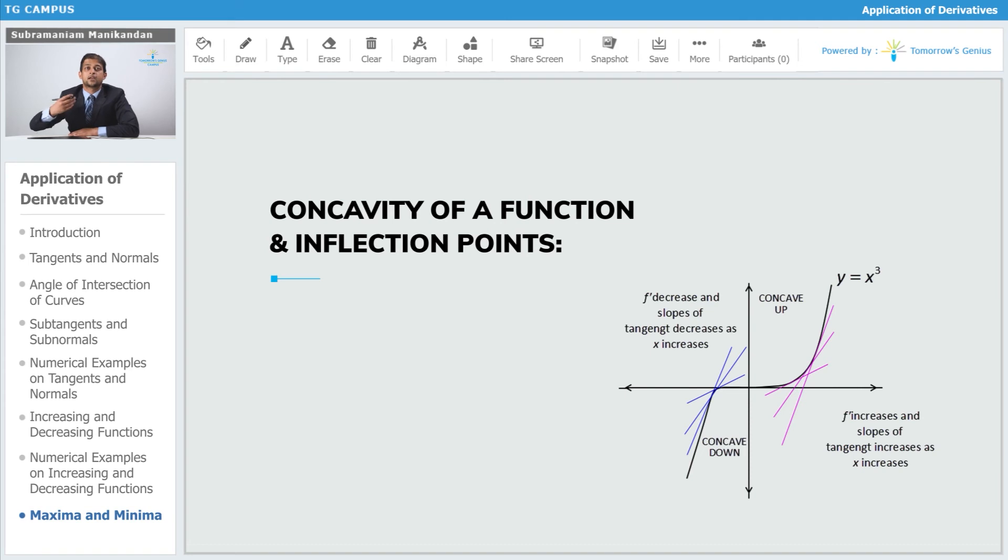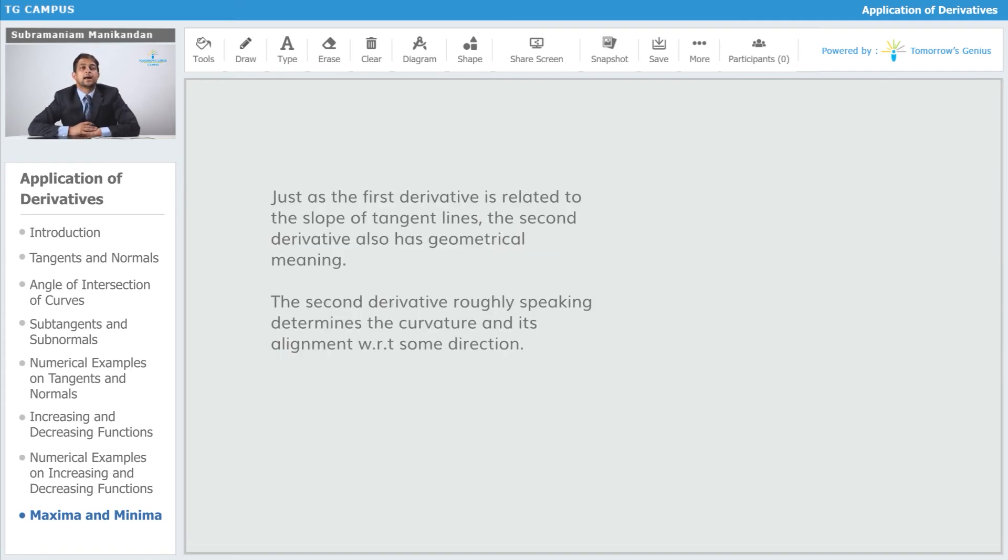Just as the first derivative is related to the slope of tangent lines, the second derivative also tells us something regarding the graph of the function. The second derivative, roughly speaking, determines the curvature of the function and its alignment with respect to some direction that we are interested in.